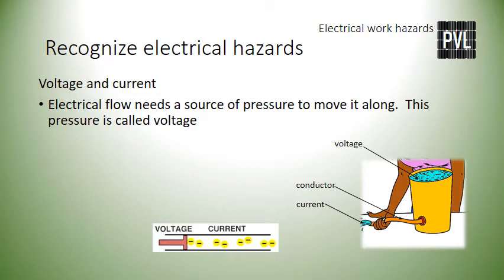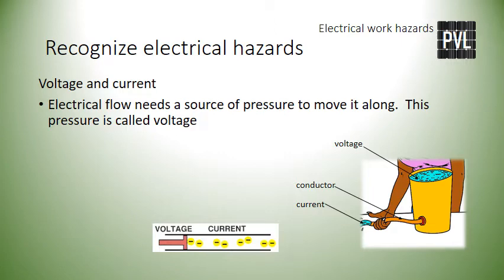Electrical current heats up the material it is in contact with. Too much current can cause enough heat to burn most materials. Persons that come in contact with electrical current, even in small amounts, can become the conductors for this current. Current can travel through a person's body and cause severe damage to body tissue internally and externally. Current can cause enough heating for body tissue to burn, and even a small amount of current can cause your muscles to contract and shake violently, which can prevent you from releasing the source of energy.